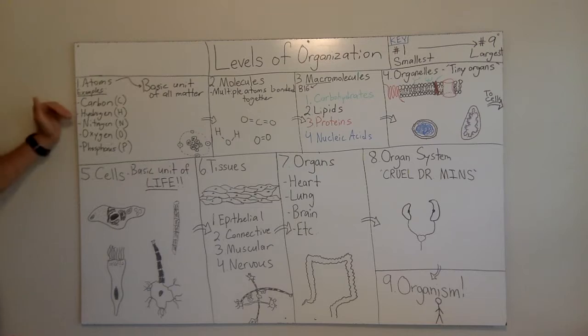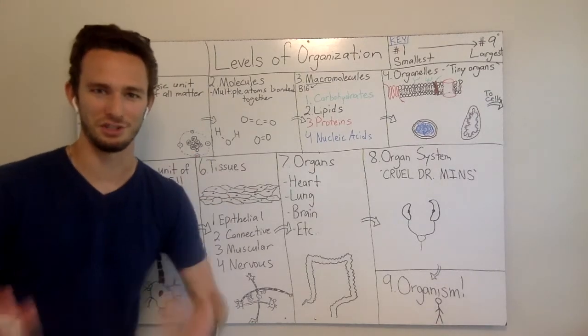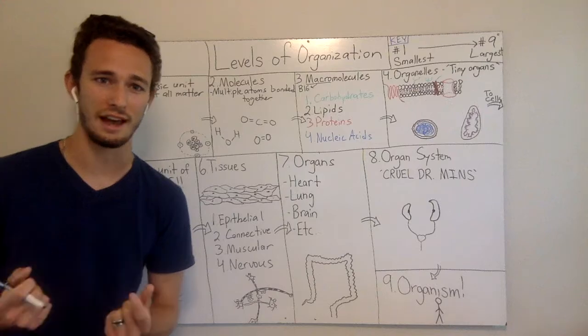We've got our five key atoms that are conducive to life, which is carbon, hydrogen, nitrogen, oxygen, and phosphorus, also called CHNOPS. So if somebody says CHNOPS in your science class, you'll know it's just those five atoms that are really conducive to life.